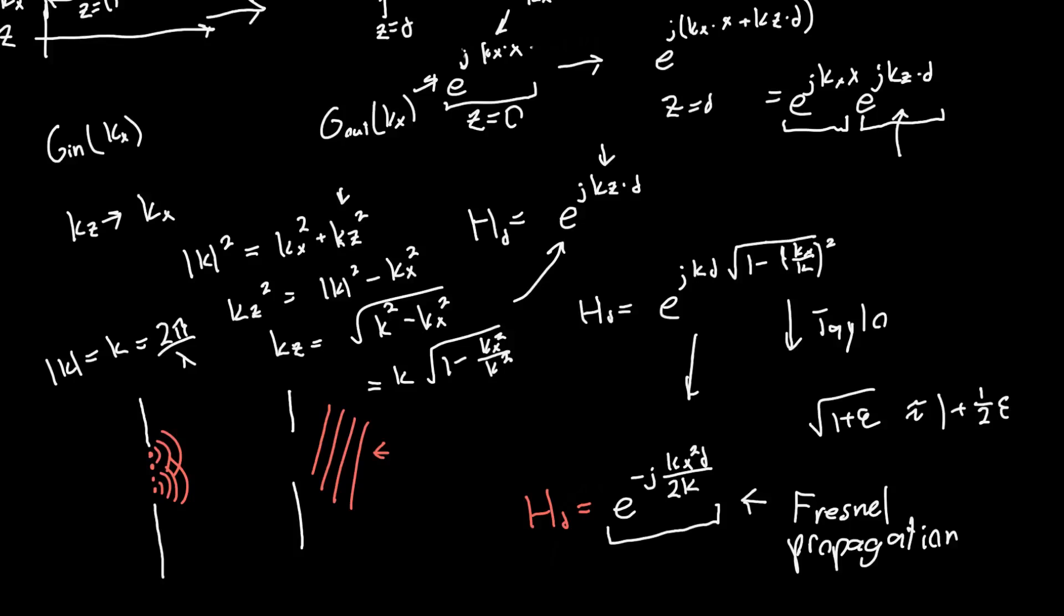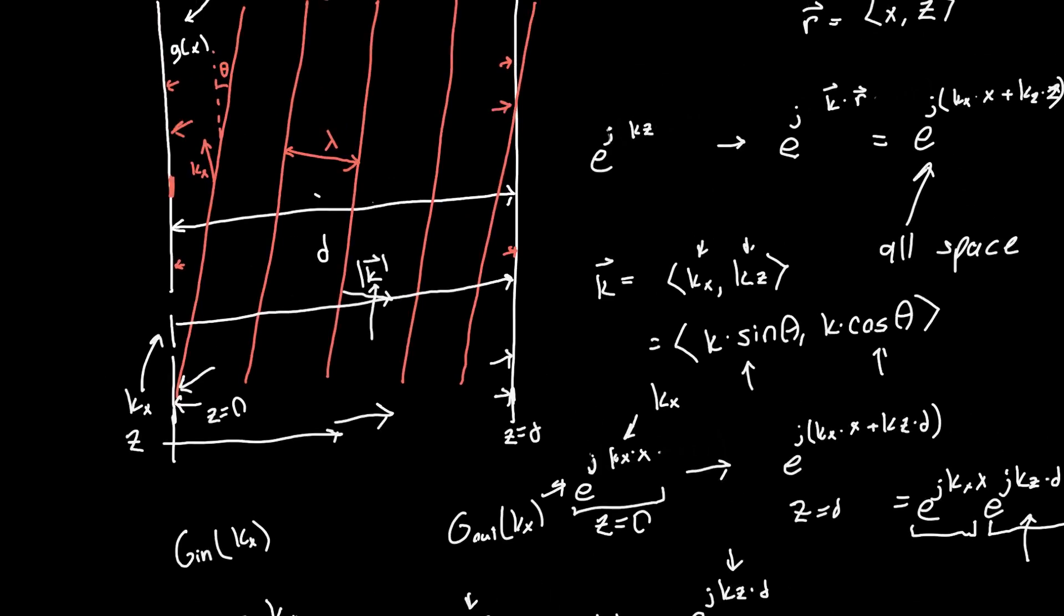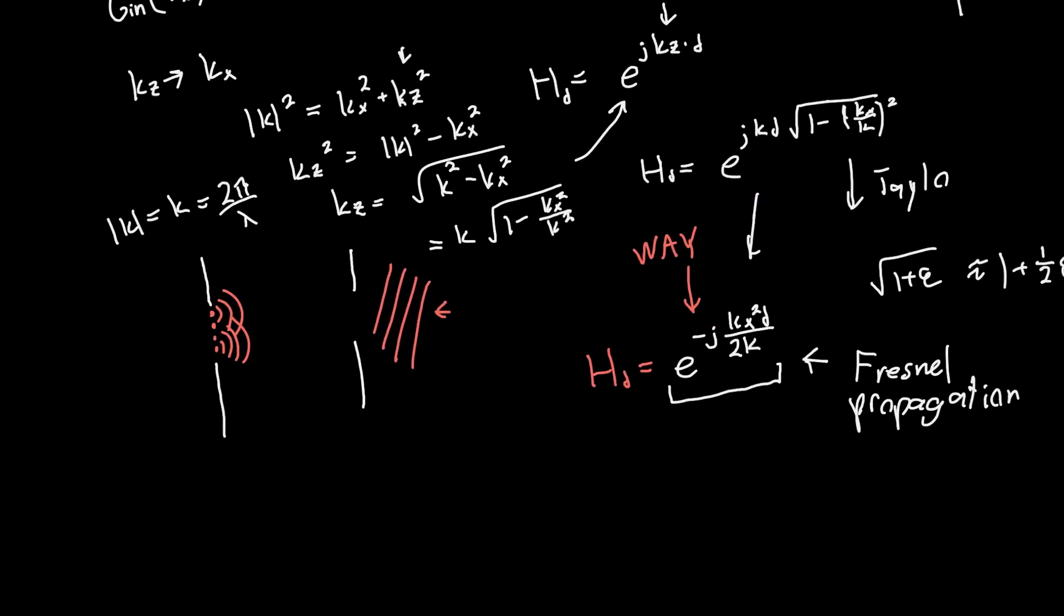But I think you'll agree that this was way simpler. So just figuring out how one plane wave propagates from one screen to another screen is so much simpler than figuring out, okay, how do we integrate all these point sources, and then how do we use some Fourier transform identities and make the paraxial approximation?